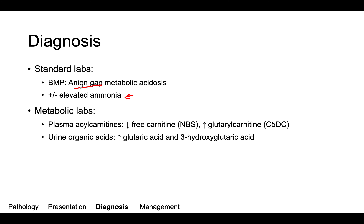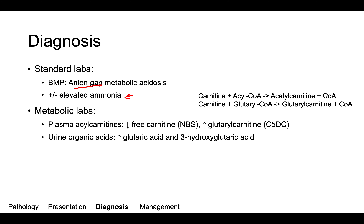To explain the carnitine findings in more detail: carnitine typically reacts with acyl-CoA to generate acetylcarnitine and CoA, allowing the carnitine shuttle to transport fatty acids into the mitochondria. However, carnitine is also prone to react with other molecules linked with CoA, such as glutaryl-CoA. This generates glutarylcarnitine instead of acetylcarnitine. So in the setting of increased glutaryl-CoA due to glutaric aciduria, there is shunting of this pathway, resulting in increased glutarylcarnitine and a depletion of free carnitine — exactly the findings we see on metabolic labs.